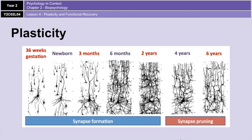Originally, researchers believed that synaptic pruning only occurred in childhood. However, we now know that that's not the case, and that your brain actually continues to prune away connections it doesn't need and strengthen those that it does need throughout the majority of your life.